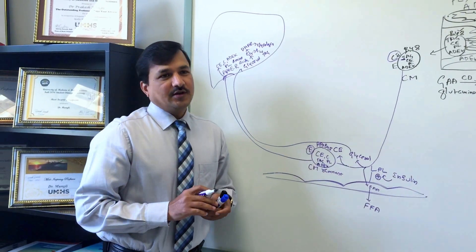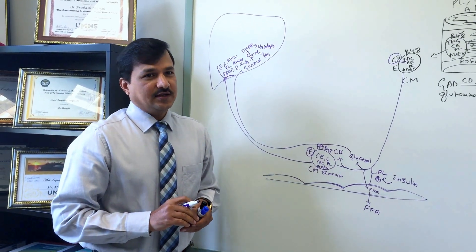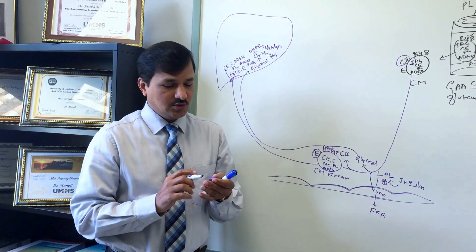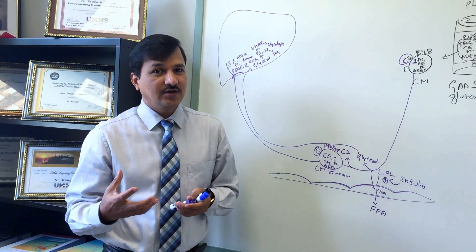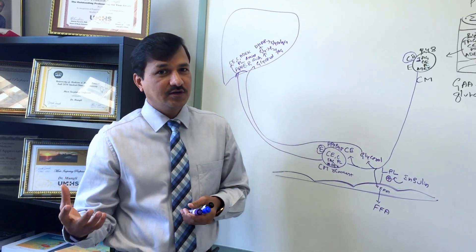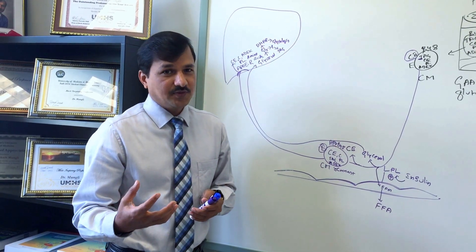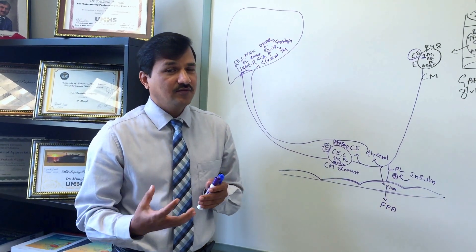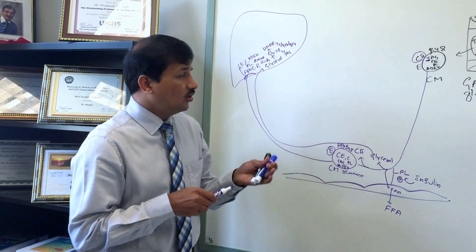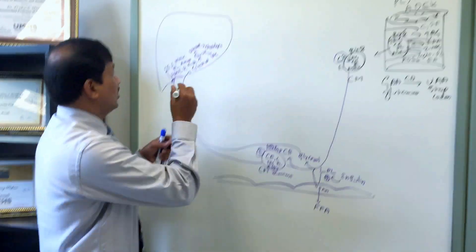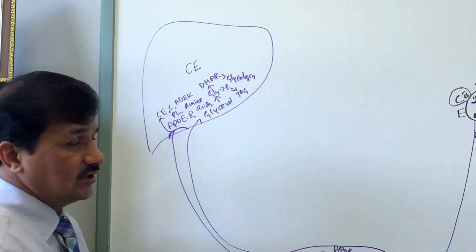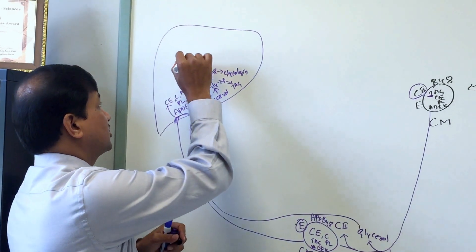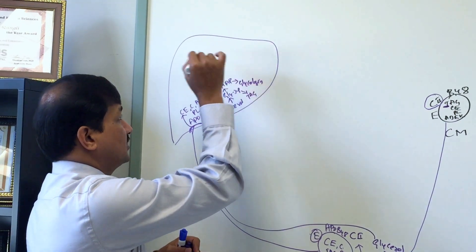Let me explain VLDL metabolism. Under fed conditions, especially when someone takes a carbohydrate-rich diet, glucose is converted to acetyl-CoA, which is diverted into fatty acid synthesis in the cytoplasm. Fatty acids and cholesterol can be synthesized under well-fed conditions, influenced by insulin. Increased cholesterol is converted to cholesterol ester in the liver by the enzyme ACAT (acetyl-CoA acetyltransferase), and triacylglycerol is also made under fed conditions.